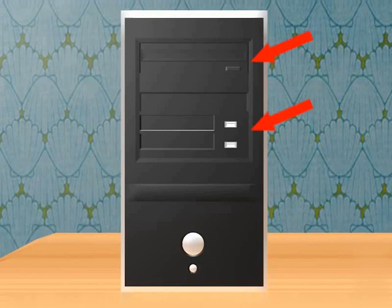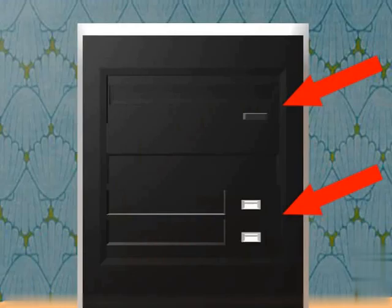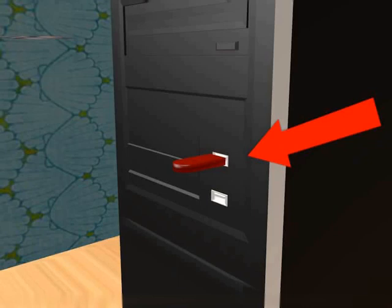There is a reset button too which helps us to restart the computer if required. Also on the front side, you will notice two or more USB ports and a DVD CD-ROM reader writer. The USB ports are used to connect pen drives to the computer. And the DVD CD-ROM reader writer is used to read or write a CD or DVD.